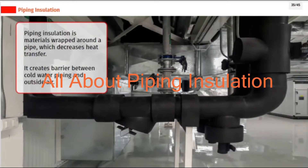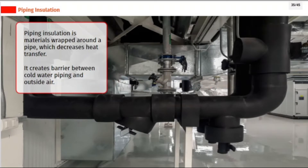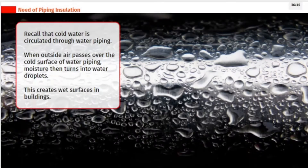Piping insulation is materials wrapped around a pipe, which decreases heat transfer. It creates a barrier between cold water piping and outside air. Cold water is circulated through water piping, and when outside air passes over the cold surface of that piping, moisture turns into water droplets, creating wet surfaces in buildings.